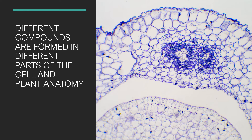Different compounds are formed in different parts of the cell and plant anatomy. Cell walls are generally not water soluble — they are lipophilic, meaning fat-loving — so we'll often find things that are either oily or resinous in that part. The liquid inside the cell is called cytosol, and in the cytosol we're often going to have water-soluble compounds like the alkaloids we'll talk about later.